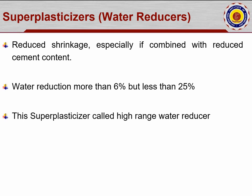Super plasticizer reduces shrinkage, especially when combined with reduced cement content. Water reduction is more than 6 percent but less than 25 percent of the cement content. It is also called a high-range water reducer, since up to one-fourth of the water quantity is reduced. When water is reduced, bleeding is automatically stopped, and the finer cement particles attach to the other aggregates, leading to increased strength.